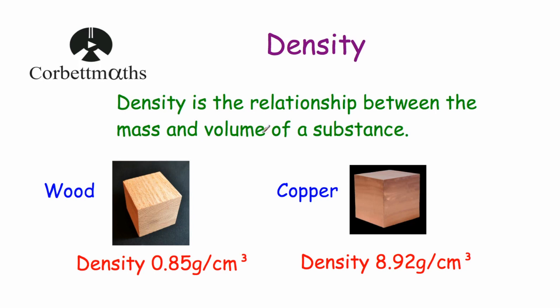So if we had two blocks — for instance this block of wood and this block of copper — and both blocks have the same volume, the block of copper would be much heavier, having a higher mass than the block of wood. And the reason is copper has got a higher density than wood.